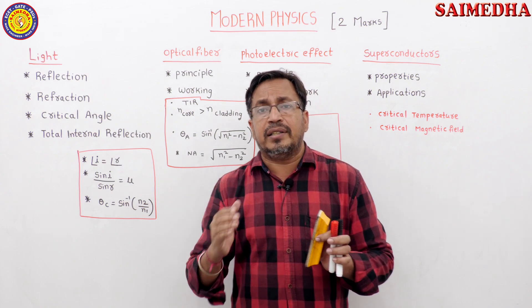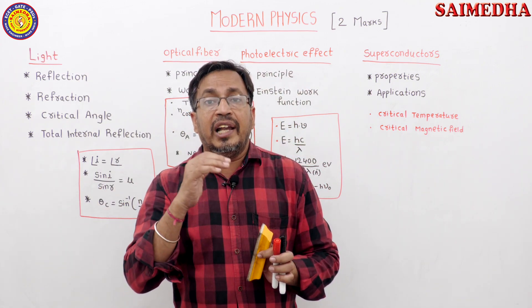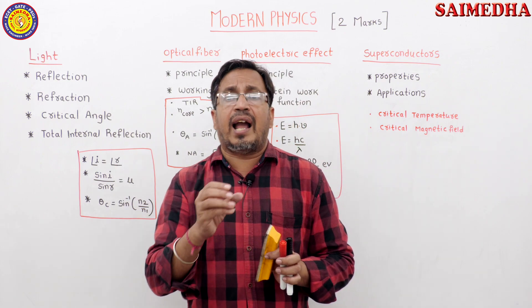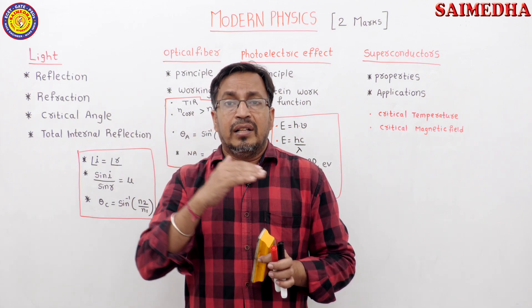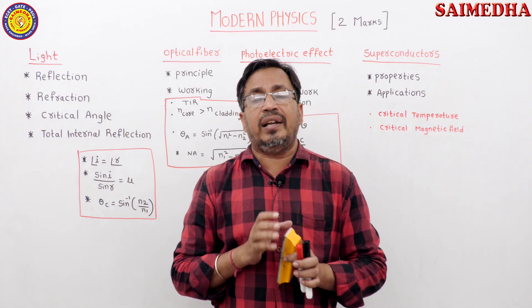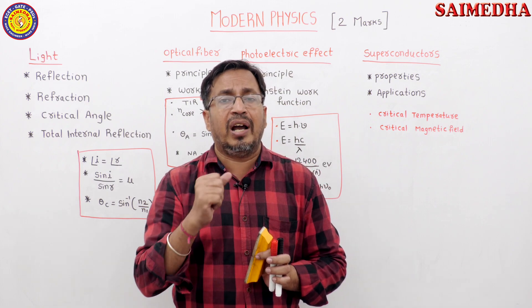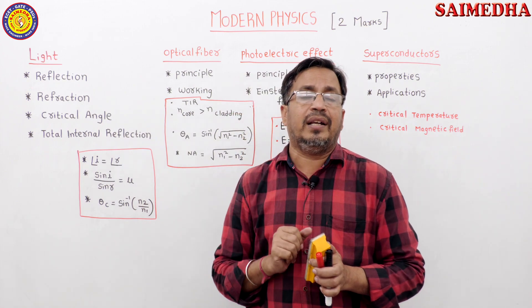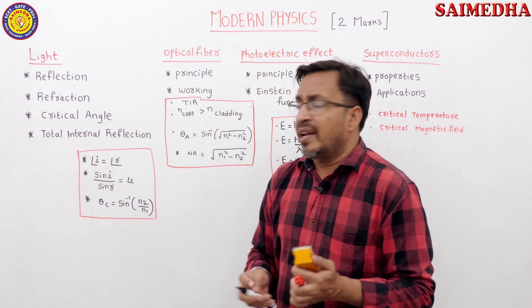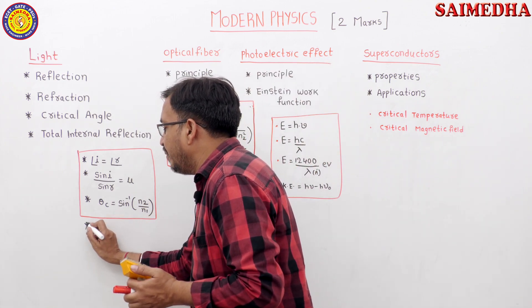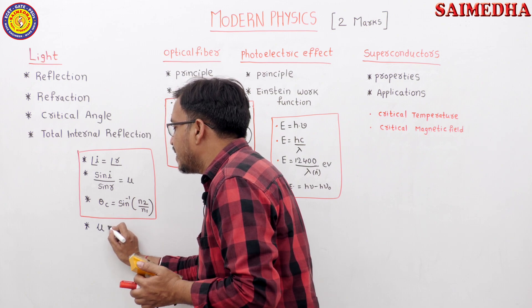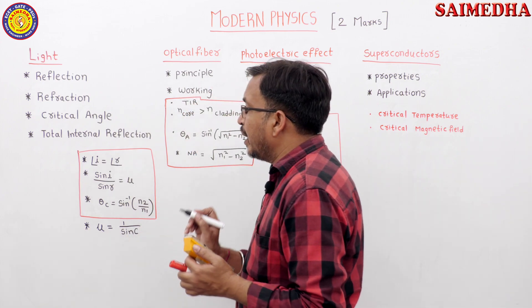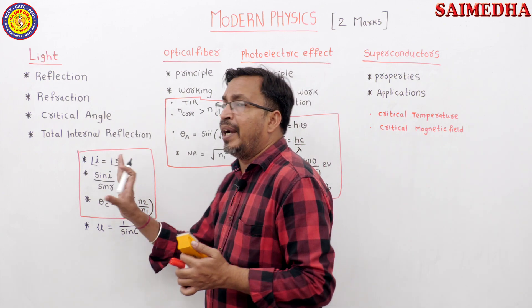Refraction when light is traveling from denser medium to rarer medium. Denser medium is a medium where the speed of light is less. Rarer medium is where the speed of light is more. When light is traveling from denser to rarer, we are discussing critical angle. Critical angle is an angle of incidence at which the refracted ray travels along boundary interface. The formula is theta c equal to sin inverse of n2 by n1. The relation between refractive index and critical angle is mu equal to 1 by sin c.